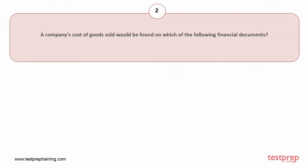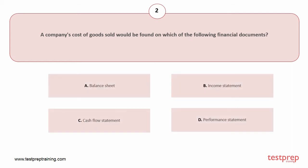Question number two: A company's cost of goods sold would be found on which of the following financial documents? Your options are: A) balance sheet, B) income statement, C) cash flow statement, D) performance statement. The correct answer is option B.